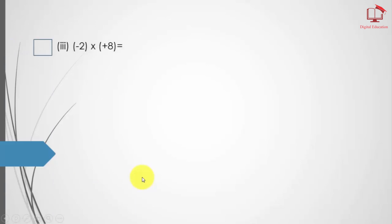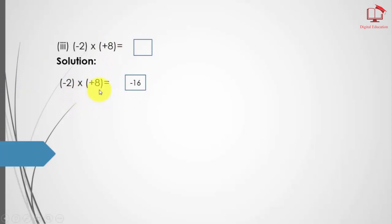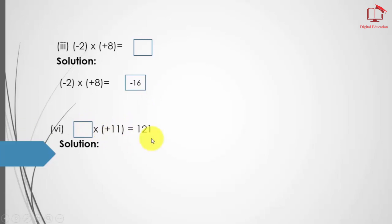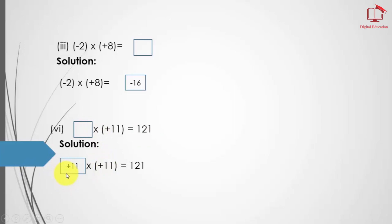Part number 3: you can see here 8 times 2 equals 16, and plus times minus equals minus. Part number 4: here we have 11 and an empty box; the answer is 121. If we multiply 11 by 11 the answer is 121, and plus times plus equals plus.